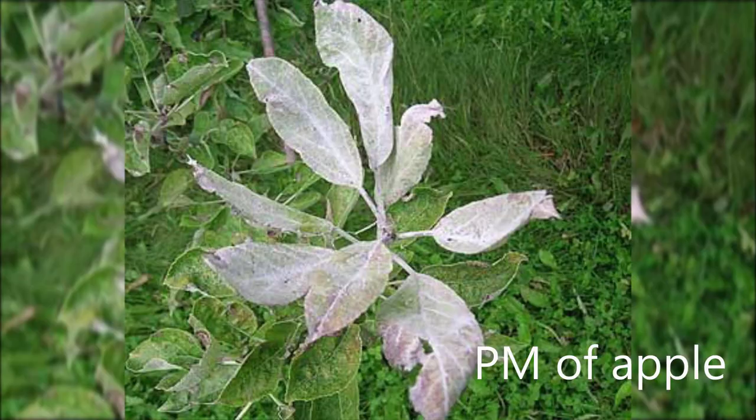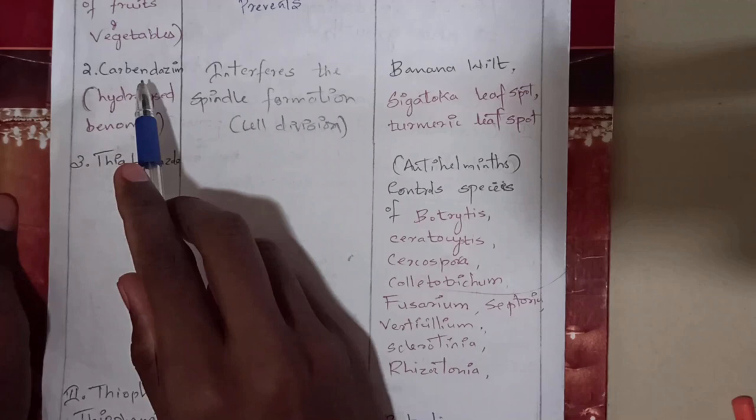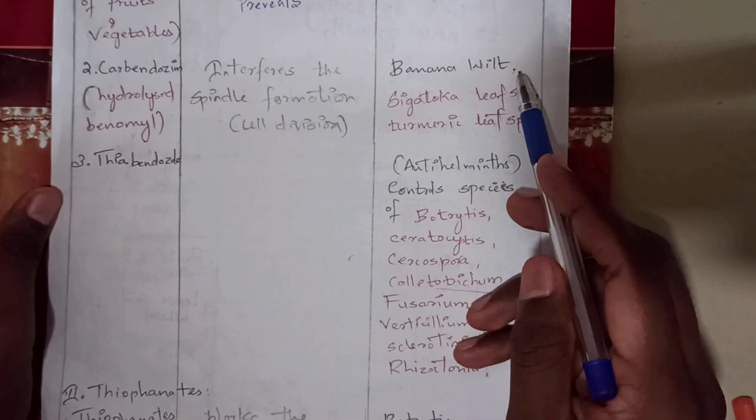The second compound in the benzimidazole group is carbendazim, prepared by hydrolysis of benomyl. Carbendazim is used against various diseases like banana wilt, Sigatoka leaf spot of banana, and turmeric leaf spot. Its mode of action is that it interferes with spindle fiber formation.